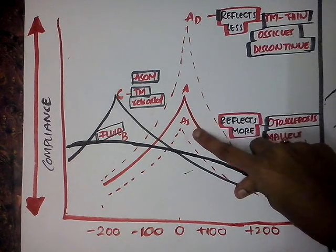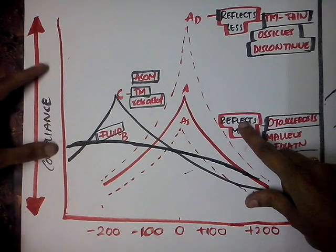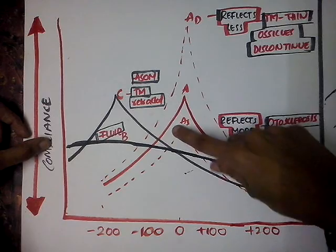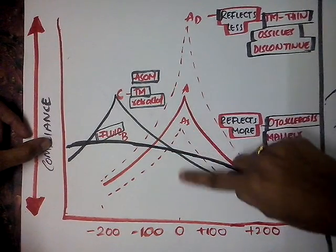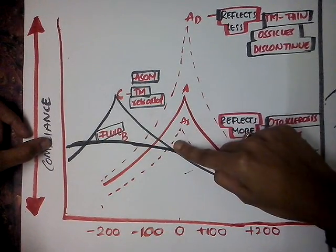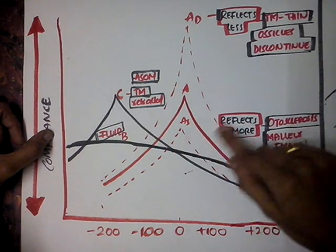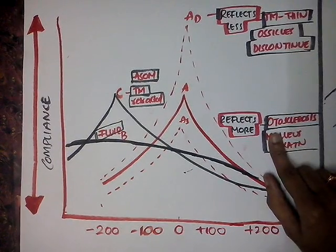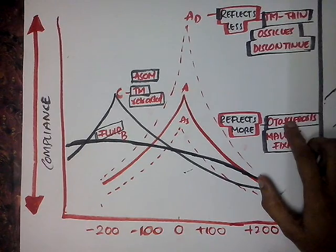A shallow curve indicates less compliance — the compliance is decreased at normal pressure. Less compliance indicates more reflection. This is seen in fixation of the ossicles, malleus fixation, and otosclerosis.